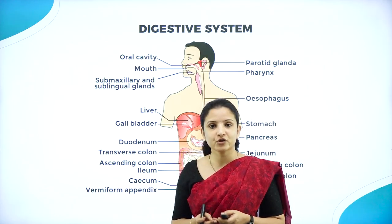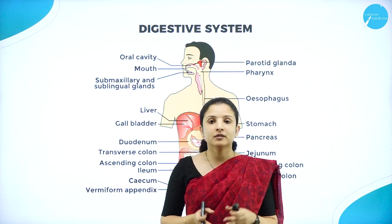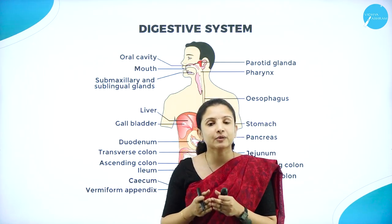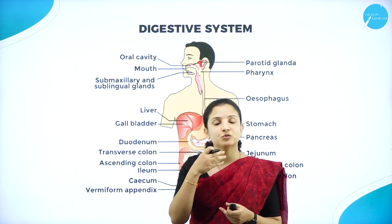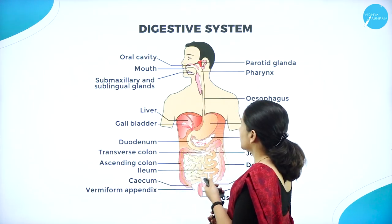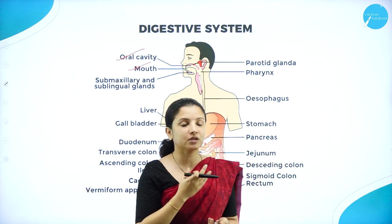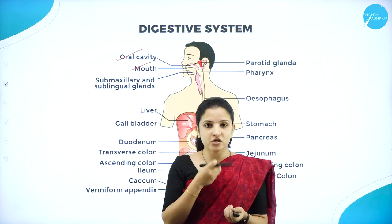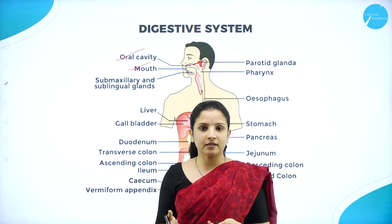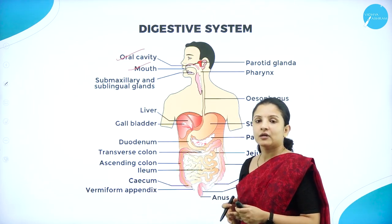The digestive system is very important for a human being. Whatever food we take in will not directly enter into our stomach and be utilized by the body. The complex food such as the carbohydrates, lipids, fats, and proteins has to be broken down into simpler forms by various digestive enzymes, and they have to pass through the alimentary canal for the digestion process to complete.